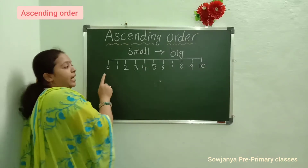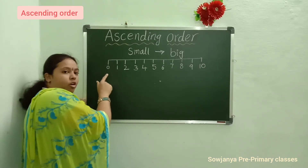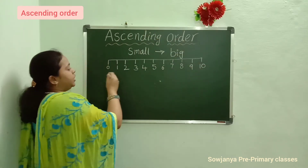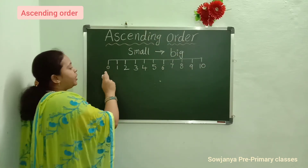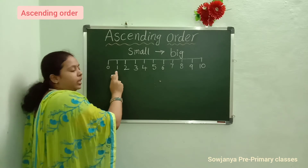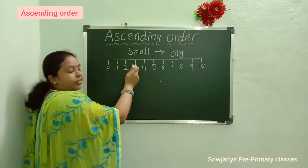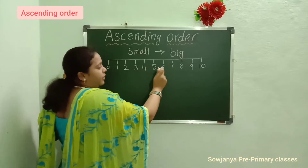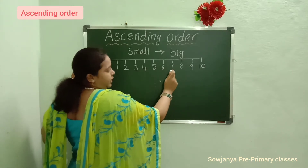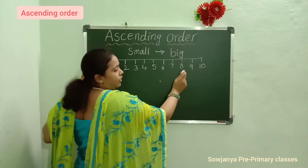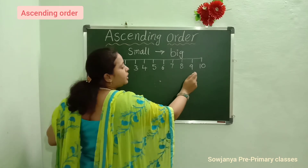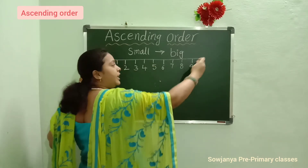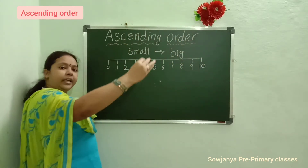Here observe the numbers are starting from small number to big number. 0 is small number. After 0, 1; after 1, 2; after 2, 3; after 3, 4; after 4, 5; after 5, 6; after 6, 7; after 7, 8; after 8, 9; after 9, 10. So like that it will become into big numbers.